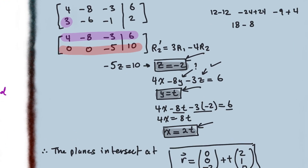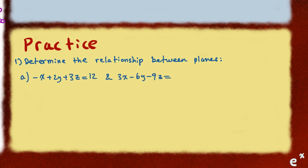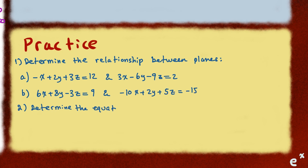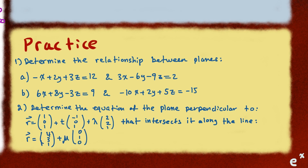I have prepared two questions for you to try on your own, and I will post solutions in a separate video. I hope this video was helpful in giving you an idea about possible outcomes of two planes in space: they can be parallel and not intersecting, coincident and lying on top of each other, or intersecting at a line. For the next lesson, we will look at how three planes can intersect in space. Thank you for watching.